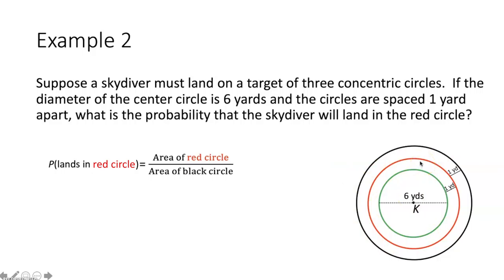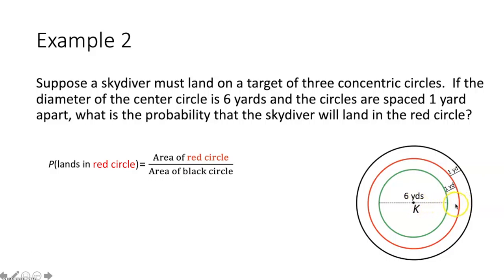We want the probability of landing inside the entire red circle region, not just the red ring. The green circle has a diameter of 6 yards, meaning its radius is 3 yards. The distance between the green circle and the red circle is one additional yard, so the radius of the red circle is 3 plus 1, which equals 4 yards.